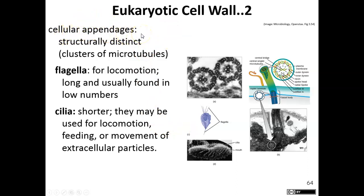Eukaryotic cells also have extracellular appendages like flagella and cilia. Flagella function in locomotion, typically moving in a straight line. Cilia are shorter and can also be used for locomotion, but are often used in feeding or movement of materials along the surface — for example, a ciliated protozoan uses cilia to push nutrients toward its mouth.